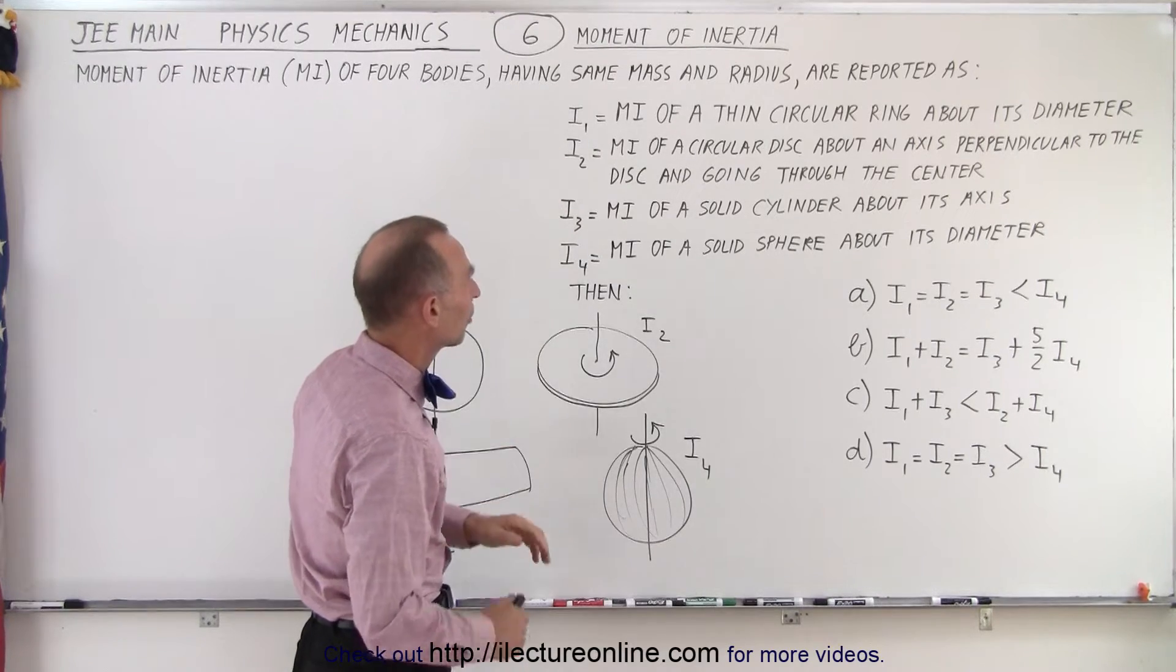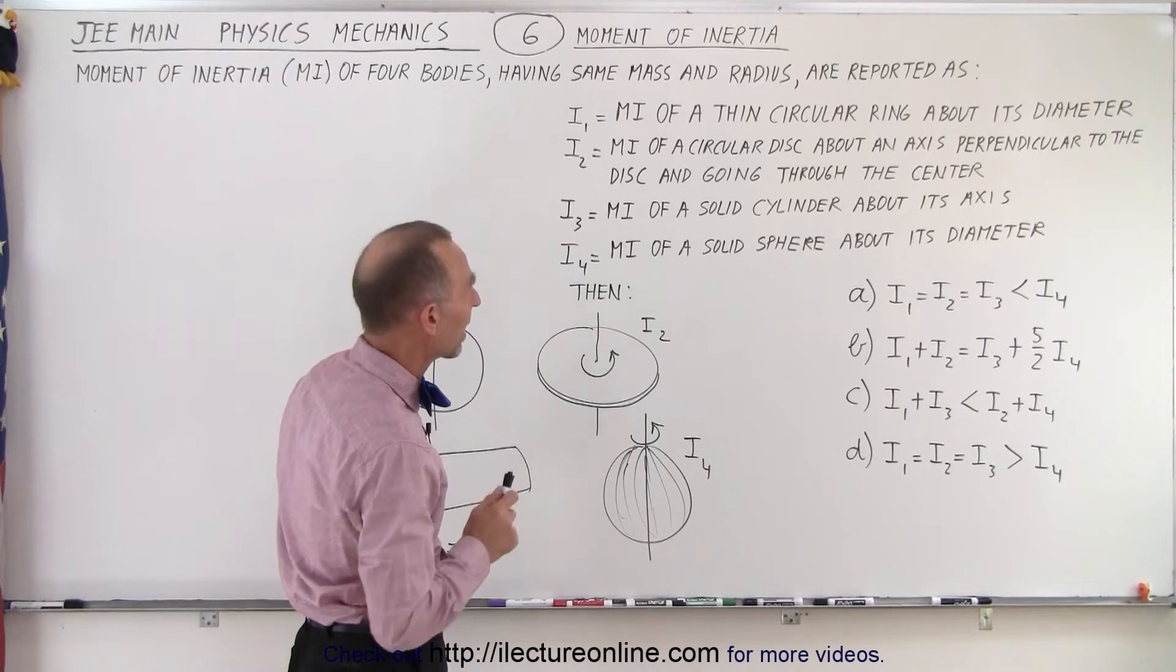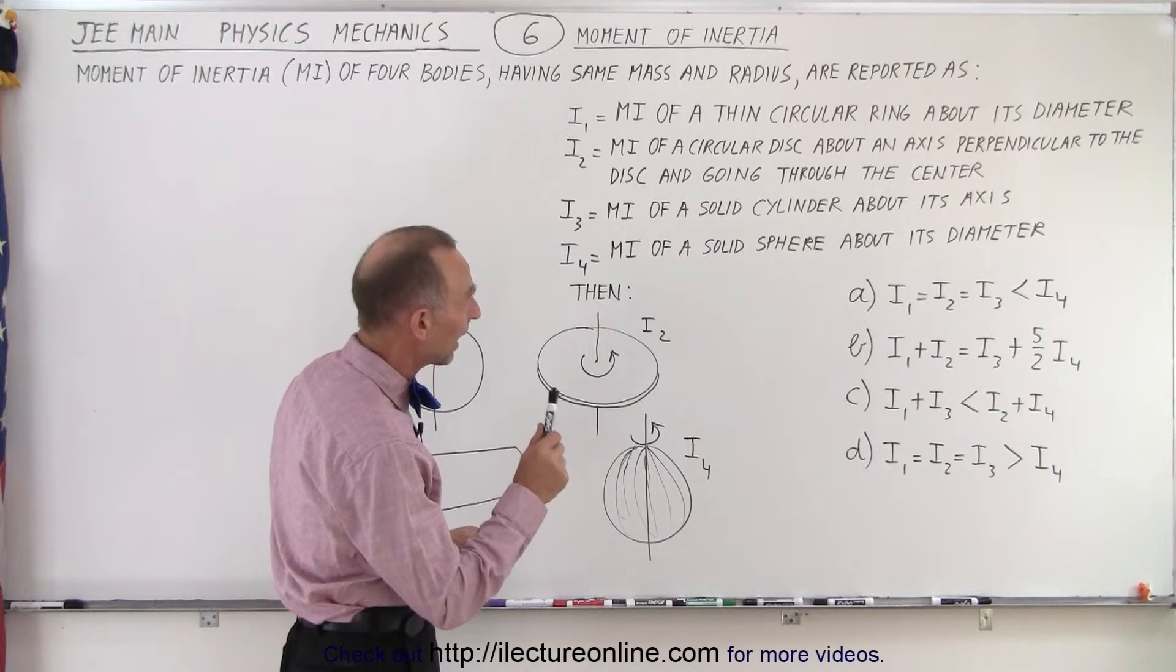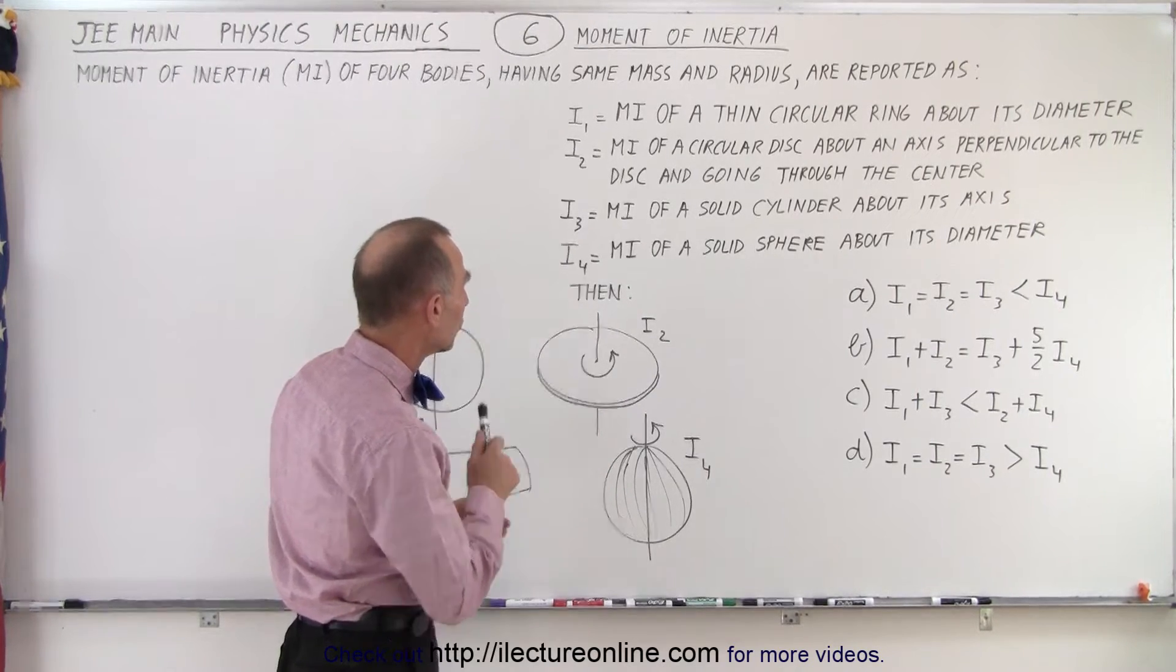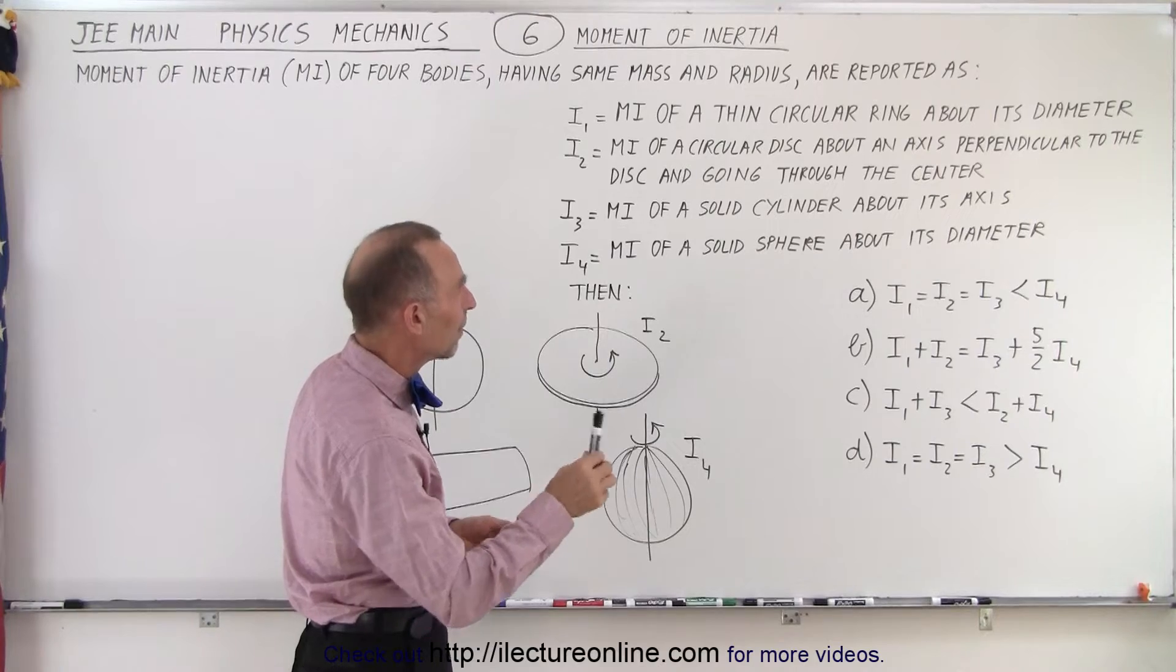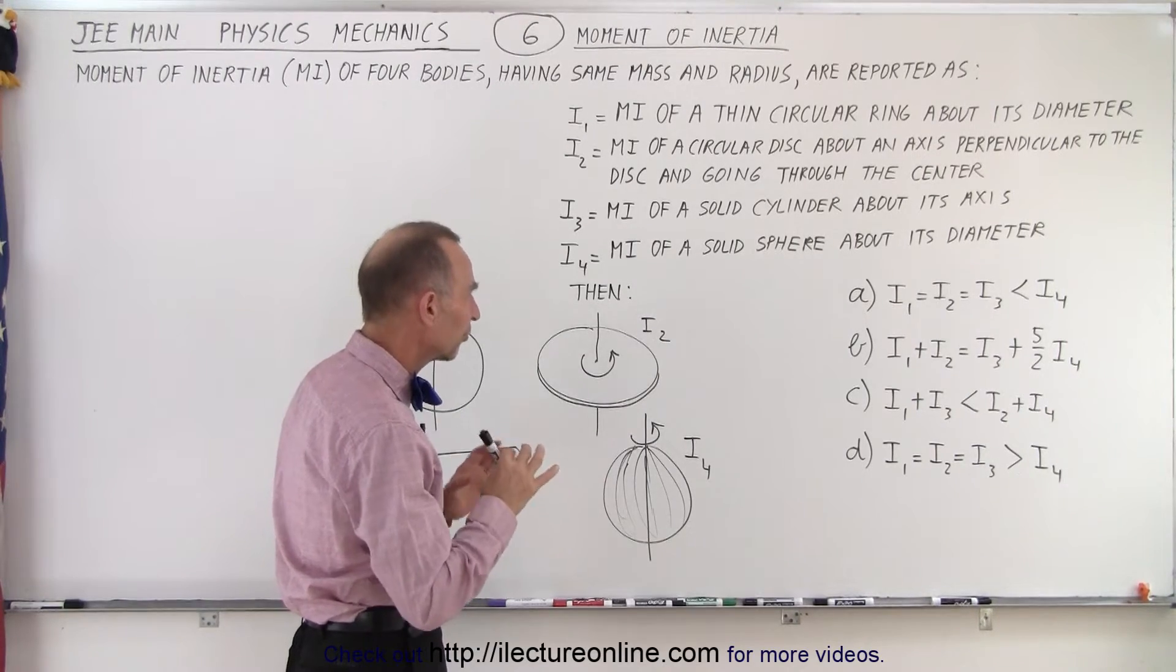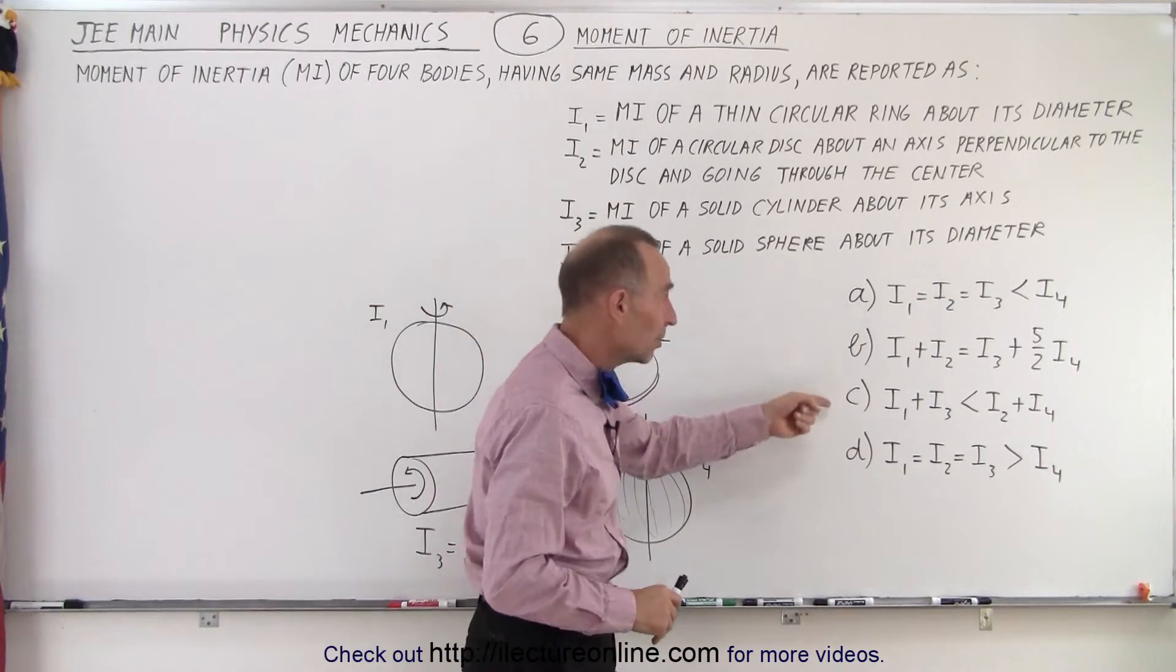I1 is the moment of inertia of a thin circular ring about its diameter. I2 is the moment of inertia of a circular disc about an axis perpendicular to the disc going through the center. I3 is the moment of inertia of a solid cylinder about its axis, and I4 is the moment of inertia of a solid sphere about its diameter.